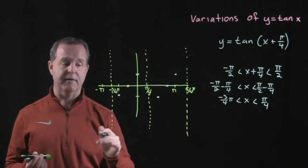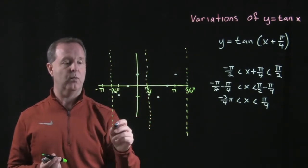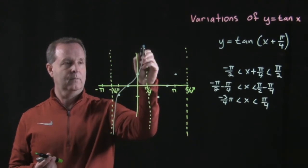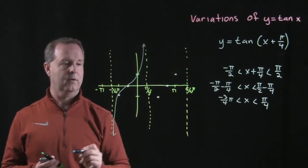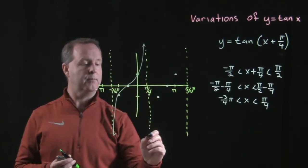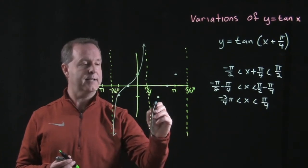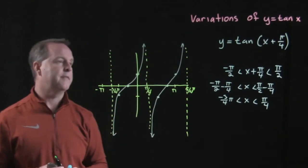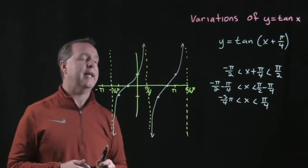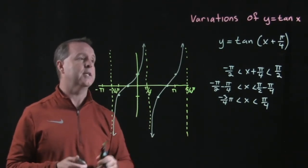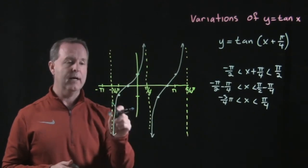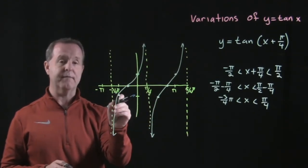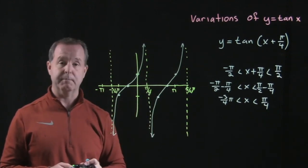Now knowing that the tangent function goes upward from left to right, I draw a smooth curve approaching asymptotically on both asymptotes. And there we are able to graph y equals tangent of x plus pi over 4, graphed over two repetitions from negative 3 fourths pi to 5 fourths pi.